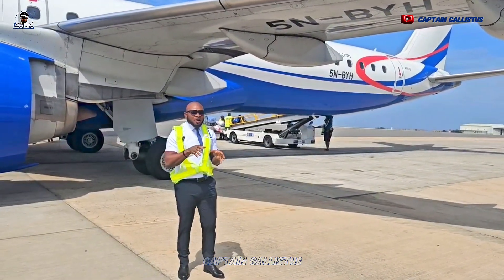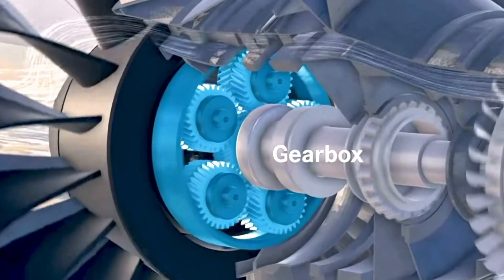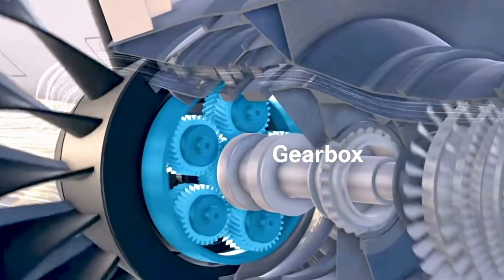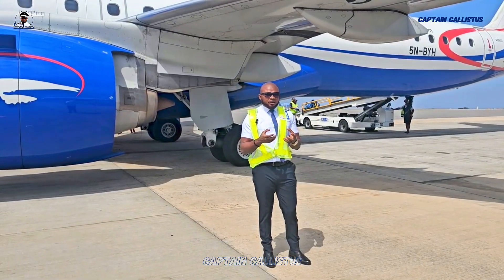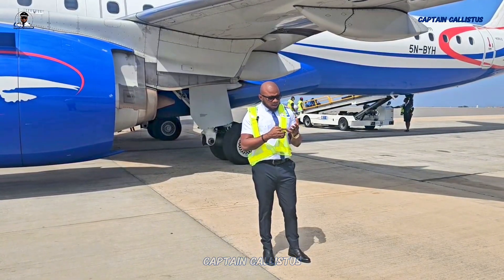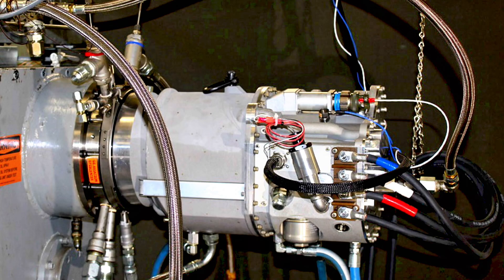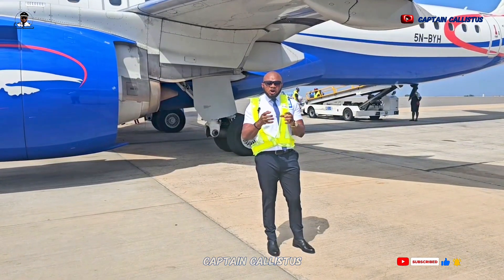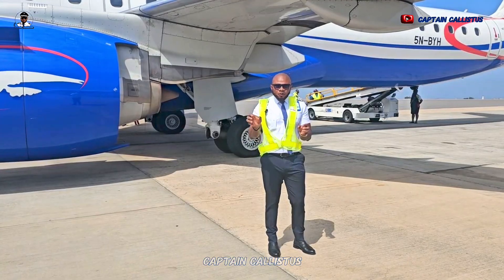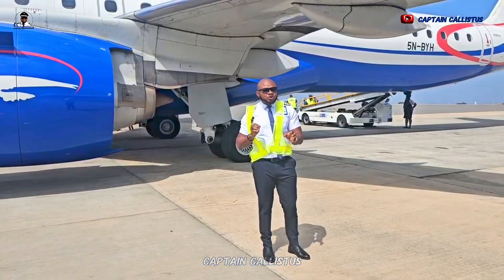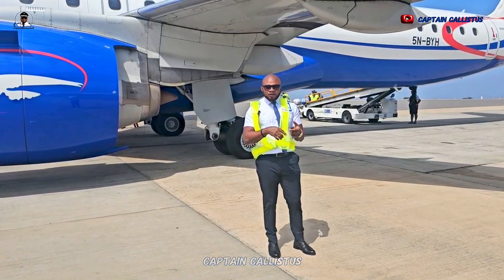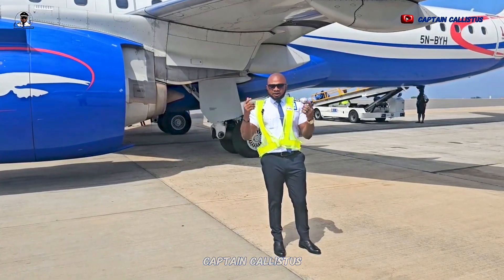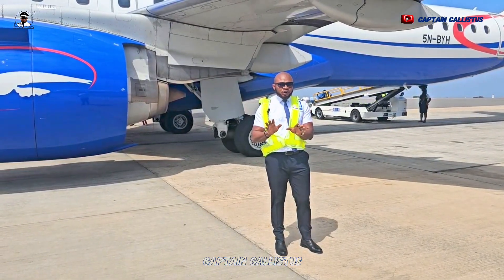Now, those accessory gears I talked about — there are components that help in supplying systems. We have the fuel pumps, the hydraulic pumps, the oil pumps, and the drive generators that give electricity to the aircraft. Those accessory gearboxes are the ones connected to each of these respective systems to give them the operation they need — to circulate hydraulic fluid, circulate oil, fuel into the engine, and electricity inside the aircraft.